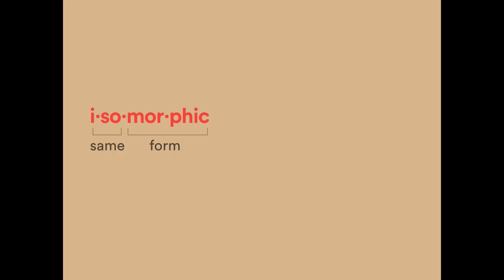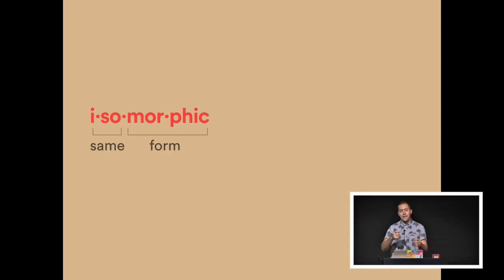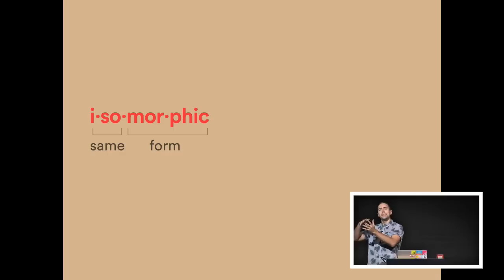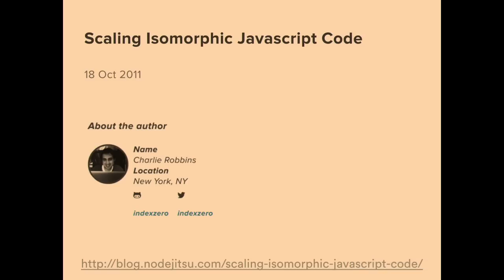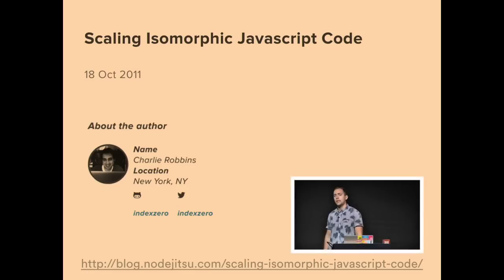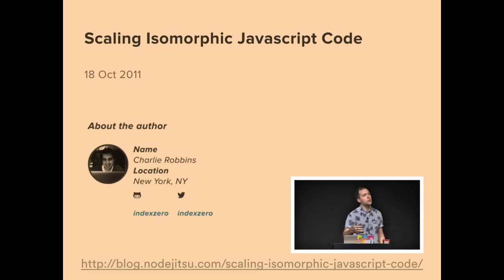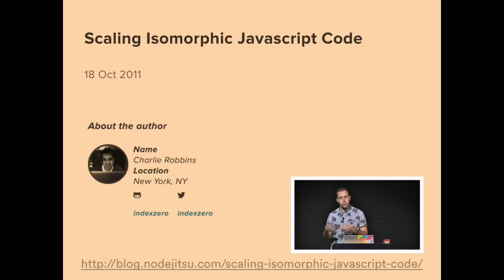The word isomorphic, if you look at the Latin roots — iso means same, and morph means form. So isomorphic just means the same form. We're sharing the same type of code on the client and the server. Isomorphic JavaScript was coined by Charlie Robbins, who's the CTO of NodeJitsu, based out of New York. He wrote a blog post in 2011 called Scaling Isomorphic JavaScript Code, proposing this term and describing patterns for sharing code between client and server.